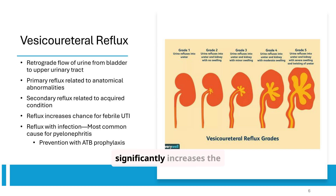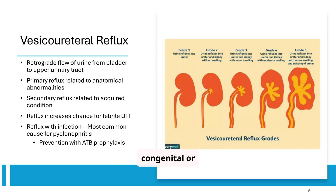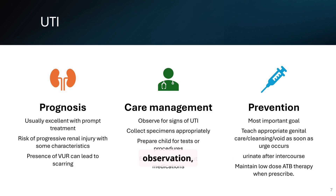Vesicoureteral reflux, or VUR, involves the backward flow of urine. Primary reflux often stems from anatomical issues, while secondary reflux is acquired. VUR significantly increases the risk of febrile UTIs and potential kidney damage. Think of urine as a one-way street — down and out. In VUR, it flows backward toward the kidneys, carrying bacteria with it. This invites repeated infections and long-term kidney damage. VUR can be congenital or acquired. Kids with frequent febrile UTIs should be evaluated for VUR using voiding cystourethrogram.